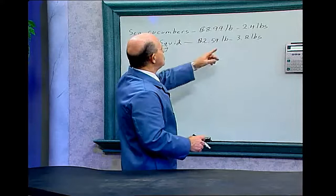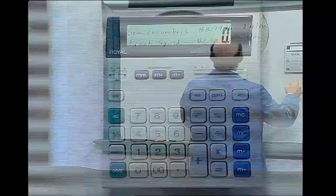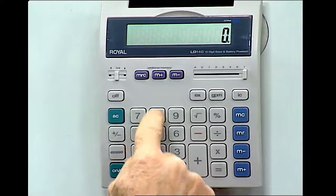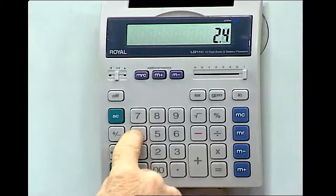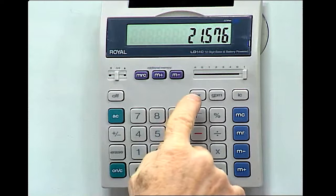Purchase 2.4 pounds of sea cucumbers at $8.99 a pound. Let's put that into our calculator. Clear it first. $8.99 times 2.4 pounds equals. Now we have a very convenient tool, the Memory Plus. That will take that number, $21.57 or $21.58, and put it into its memory.